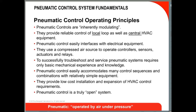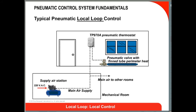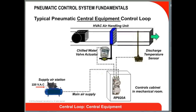Pneumatics can control the central equipment and the local loop. In this local loop example, the TP970 thermostat is controlling perimeter fin tube heat. They are also used to control other unitary equipment such as fan coils, VAV boxes, unit ventilators, and rooftop units.